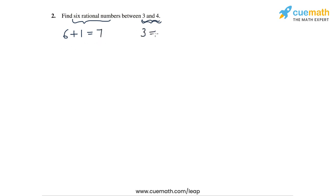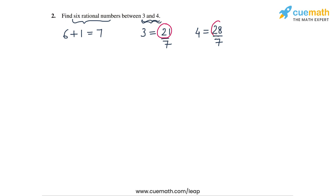The second method rewrites the endpoints as rational numbers with the denominator 6 plus 1, or 7. So 3 is actually 21 by 7 and 4 is 28 by 7. We write the two numbers with denominator 7, and now the numerators 21 and 28 have a gap of 7.